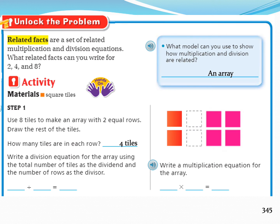Now let's write a division equation for the array using the total number of tiles as the dividend and the number of rows as the divisor. What is the total number of tiles? 8. And the number of rows? 2 rows. 8 divided by 2 equals 4. Together, let's write a multiplication equation for the array. The number of rows is 2, and the number of columns is 4. 2 multiplied by 4 equals 8.